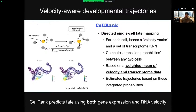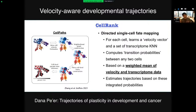Once CellRank learns these transition probabilities — for example in the pancreas — it can predict how likely any individual cell is to become an epsilon cell or an alpha cell. These predictions use both gene expression patterns and RNA velocity, and that combination substantially improves accuracy. We're very fortunate that Dona is going to give one of our keynote lectures later today. I also want to briefly mention a second method called CellPaths that also integrates expression and velocity information at the meta-cell level — you can check that out on BioRxiv.